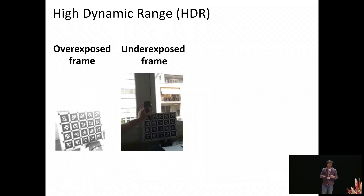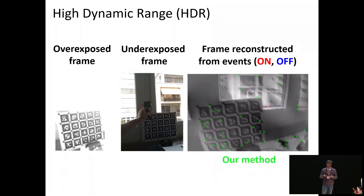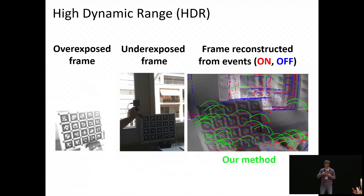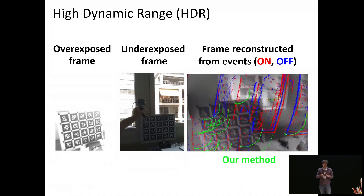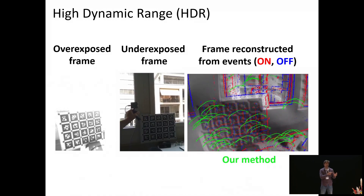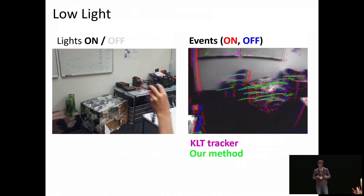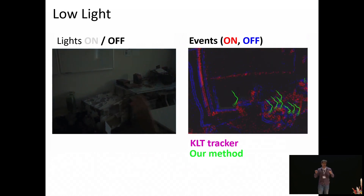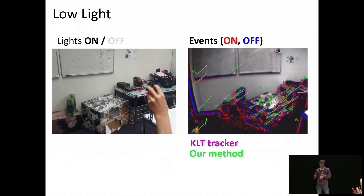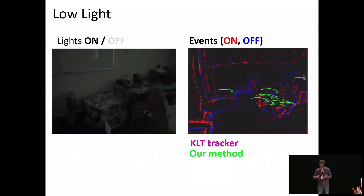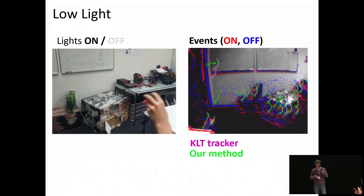In another experiment, we tracked features in overexposed environments. On the right, you can see a frame taken in overexposure — much of it is washed out. Using events, we can reconstruct a high dynamic range image and initialize our feature tracker on it. We then use subsequent events to track features over time. Our method manages to track features that were initially not visible on the overexposed frames. In a final experiment, our feature tracker in low-light conditions is able to keep track of features even when the light is turned off and on again, thanks to the very high dynamic range of the events.